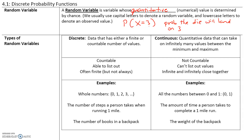There are two types of random variables: discrete and continuous. A discrete random variable has data that has either a finite or countable number of values. These values are countable, able to list out, often finite but not always. For example, whole numbers such as 0, 1, 2, 3. The number of steps a person takes when running one mile — the person can take 1,200 steps or 1,201 steps, but they can't take 1,200.03 steps. Similarly, the number of books in a backpack could be 2, 3, or 4 books, but you can't have 5.6 books. So discrete random variables are variables that are countable and that we can list out.